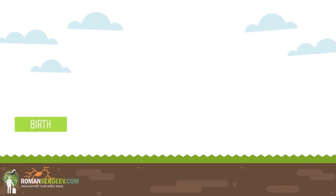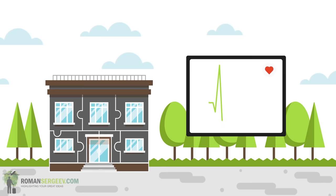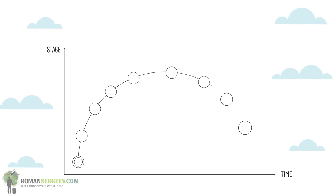Any system has its life cycle. Everything starts from birth, then follows growth, prime, aging, and finally death. Organizations also evolve in this way, but unlike living organisms, they can remain viable indefinitely. The leader's goal is to bring the organization to its prime and allow it to gain a foothold in this position, preventing the process of destruction.